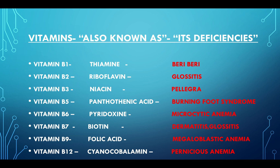Vitamin B5 (Pantothenic acid) — deficiency produces Burning Foot Syndrome. Vitamin B6 (Pyridoxine) — deficiency produces Microcytic Anemia. Vitamin B7 (Biotin) — deficiency produces Dermatitis and Glossitis. Vitamin B9 (Folic acid) — deficiency produces Megaloblastic Anemia.